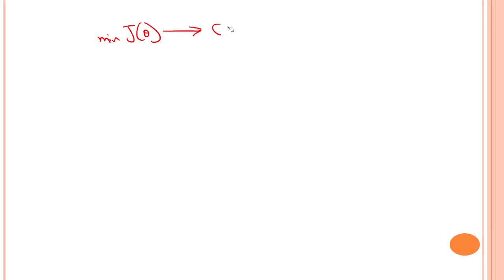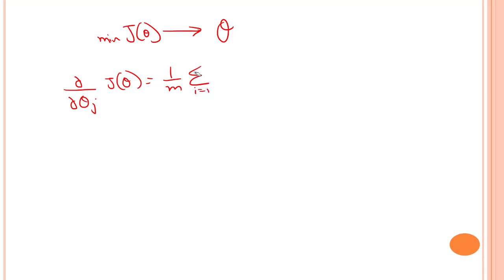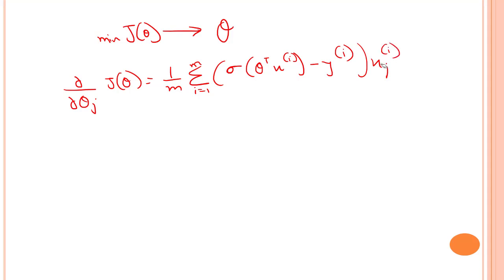Basically, we have to minimize j(θ) to get the theta parameters, which will help us predict with the model. To minimize it, we take the partial derivative with respect to theta. We get (1/m) times the sum from i=1 to m of our sigmoid function — basically we have the sigmoid of theta-transpose x.